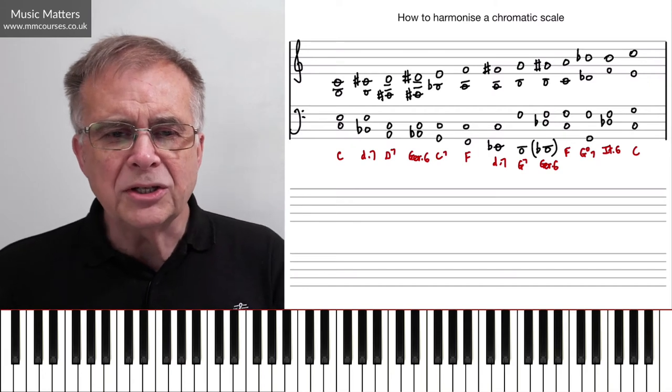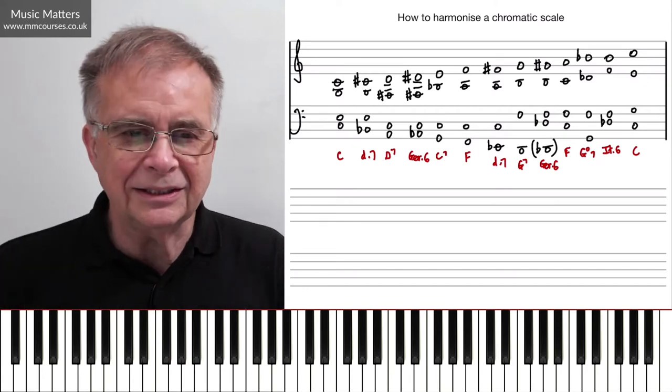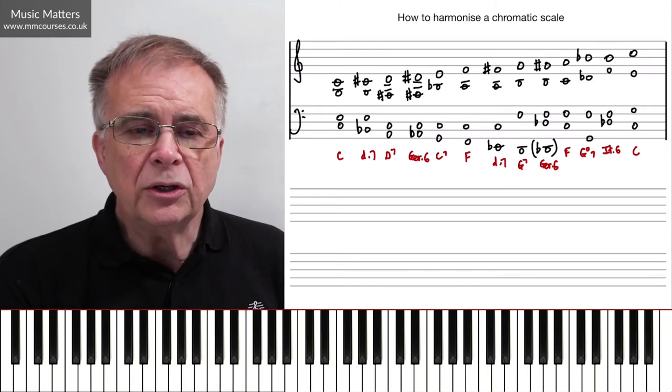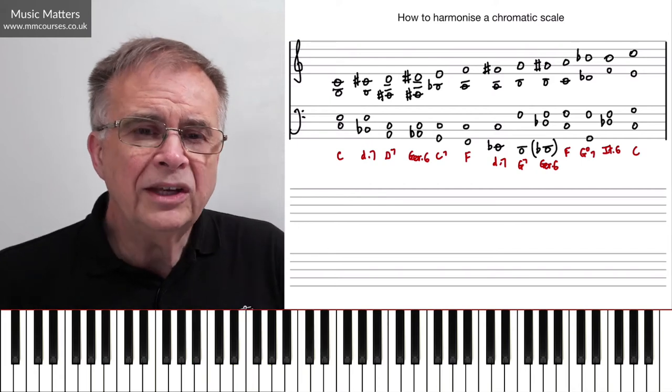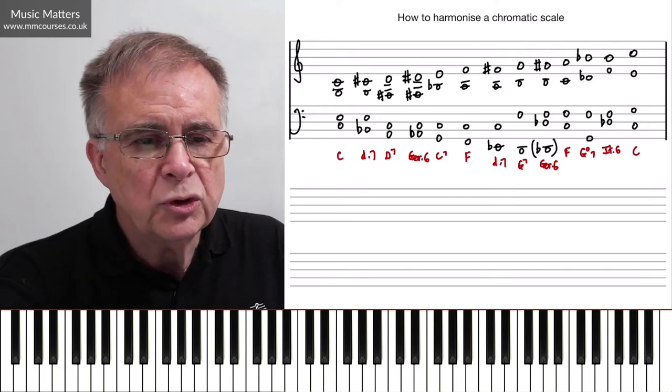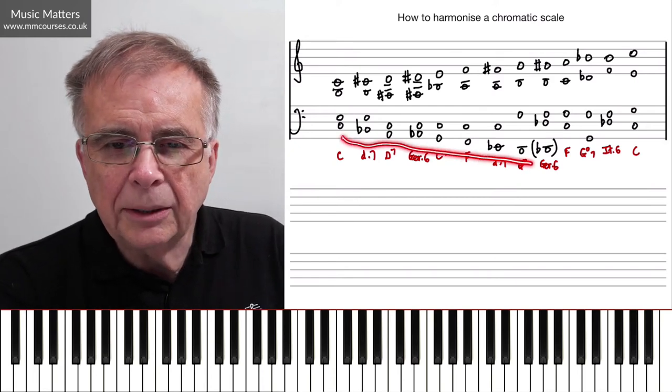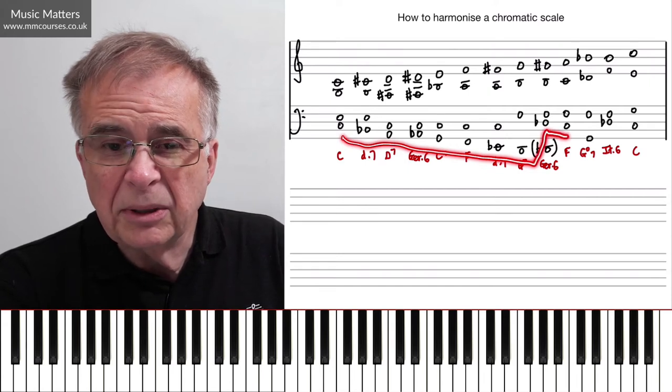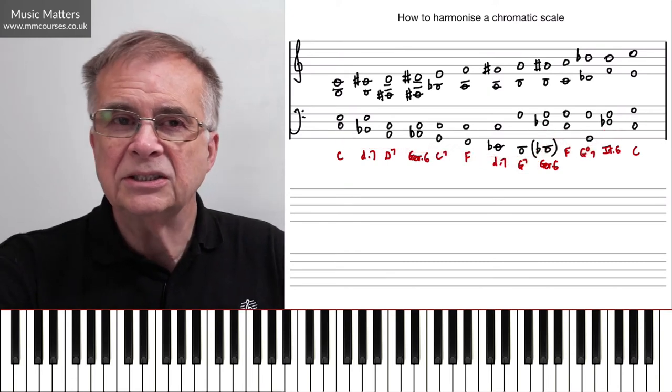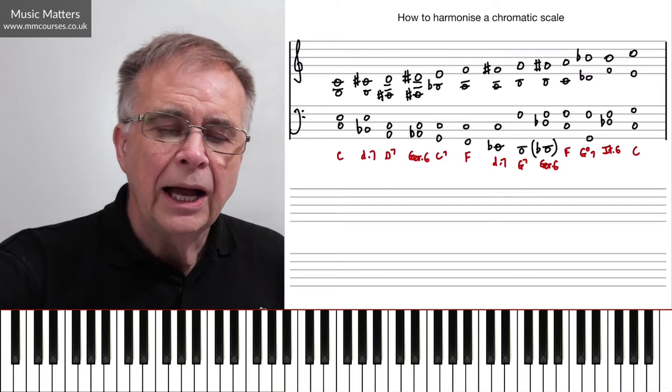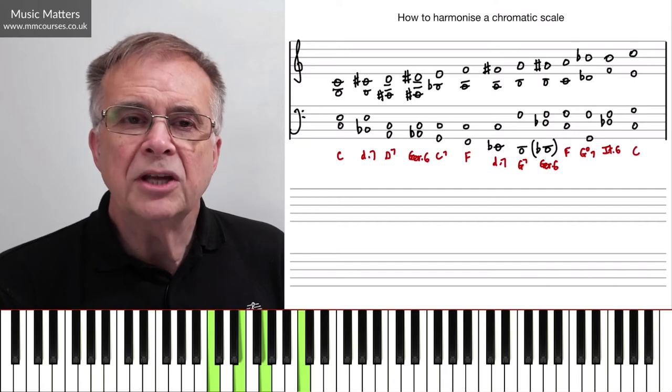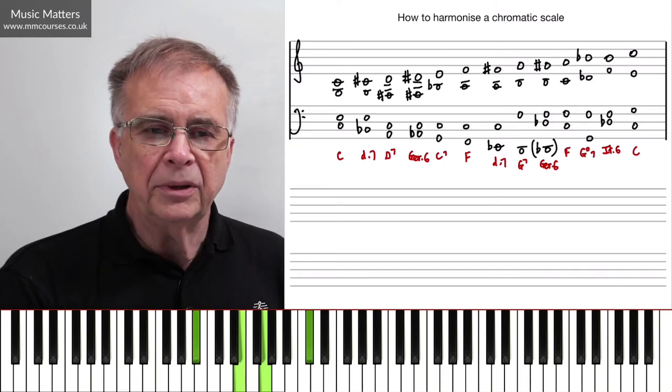But diminished seventh chords are very flexible. And one thing you might consider, if you're in a chromatic passage, and you've no idea what to put down for the next chord, a diminished seventh is often a useful kind of let-out clause. I've used another one during the course of this scale, but I'm trying to do different things to show you different possibilities within the scale. But there we are, C major, straight on to a diminished seventh.